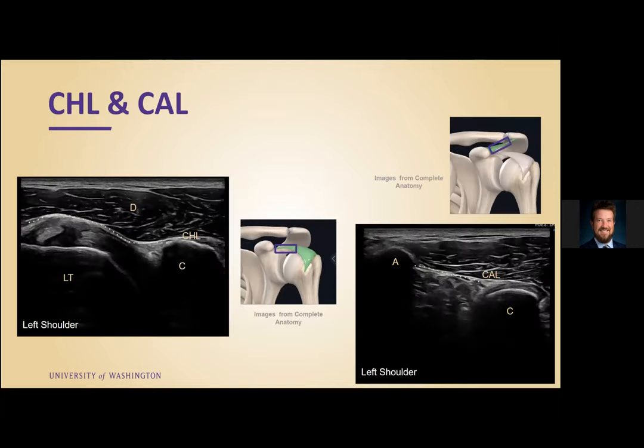We then moved on to our coracohumeral and coracoacromial ligaments. We looked at the coracohumeral ligament, which originates from the lateral side of the coracoid and extends over the rotator interval. Then we looked at the coracoacromial ligament, which extends from the acromion to the coracoid as well. Moving on with our report, the coracohumeral and coracoacromial ligaments are intact.